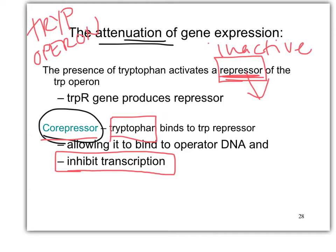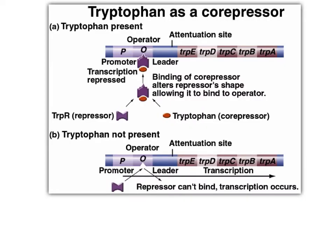So, tryptophan as a co-repressor. The tryptophan molecule — that's an amino acid, remember, from prereq — tryptophan is an amino acid. It acts as a co-repressor of its own anabolic operon. What do we mean by anabolic?